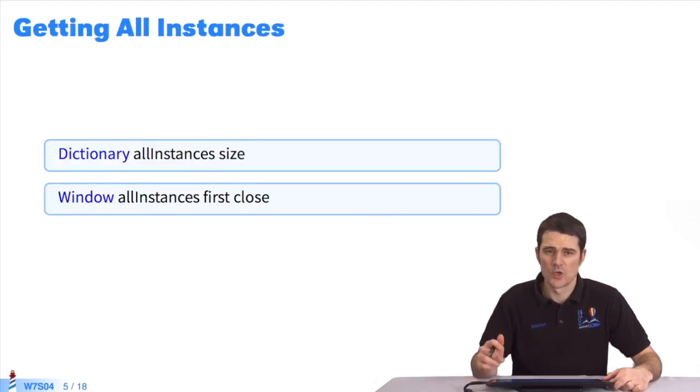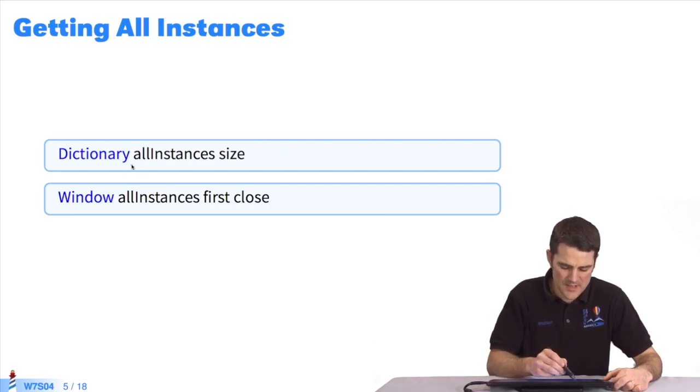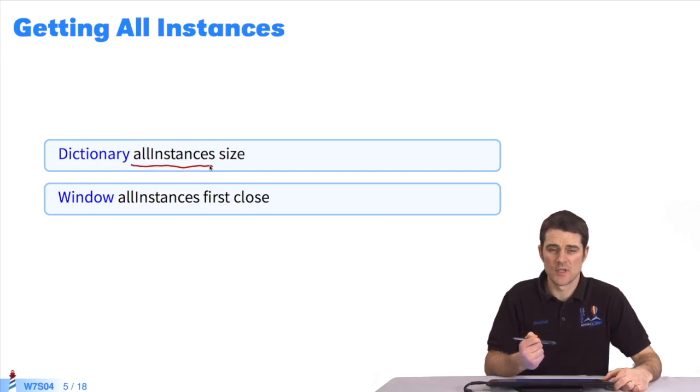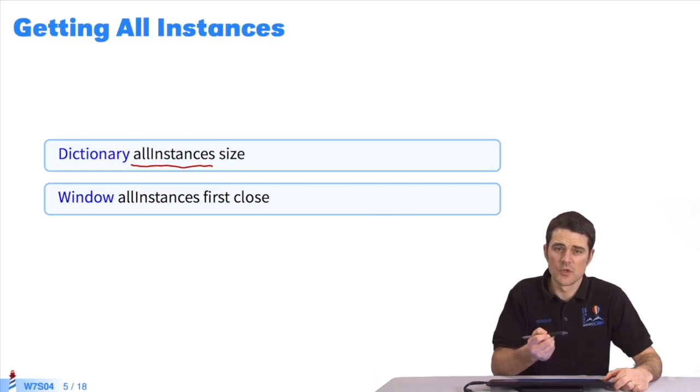First, how do we collect all the instances of a class? If we send the allInstances message to a class, it shows all the objects that are its instances. It's a collection of all the standard objects.